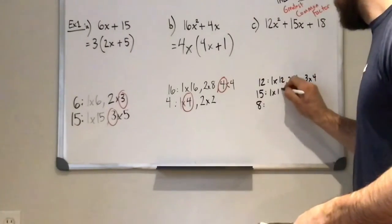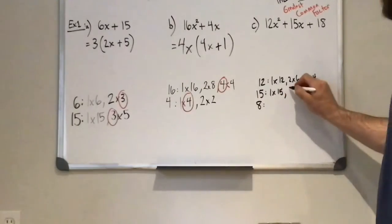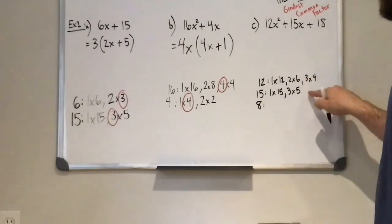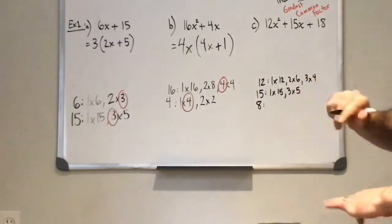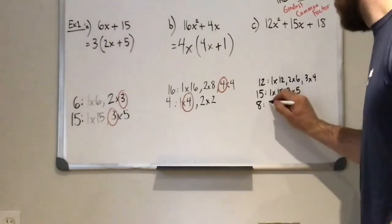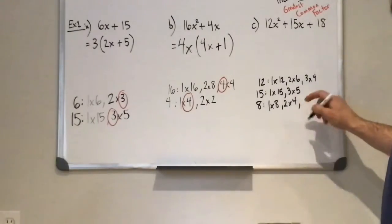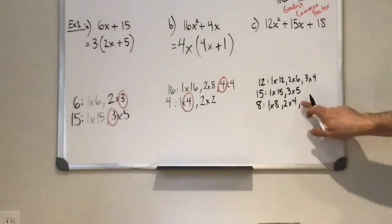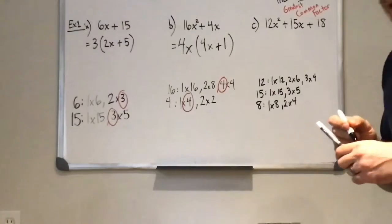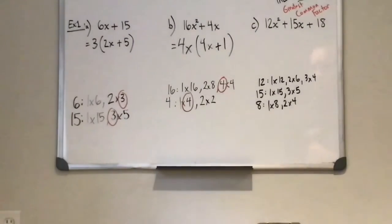1 times 15, 2 doesn't work. 3 times 5, 4 doesn't work. 5's here. That one's complete. 1 times 8, 2 times 4, 3 doesn't work. 4 is here. Okay, so these 3 are complete sets here.